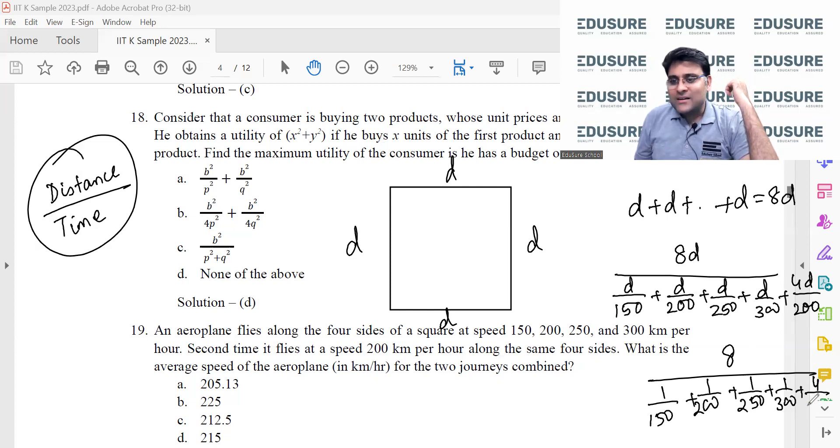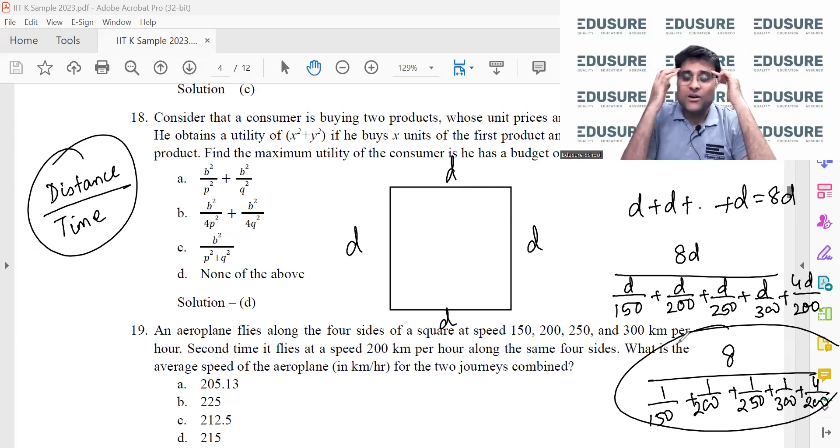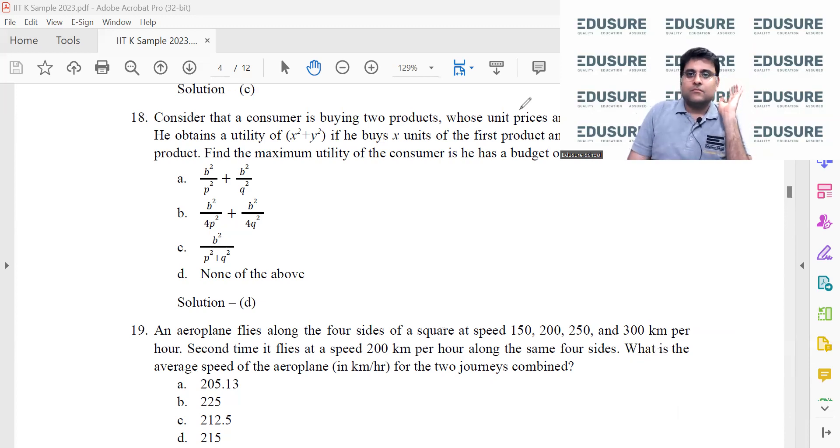You don't have to mug these things up that I need to always remember I need to use harmonic mean in order to calculate the average speed. Why do you need to mug this thing up? Total distance by total time, you do it, you will automatically see that it is the harmonic mean. The answer is A, 205.13.